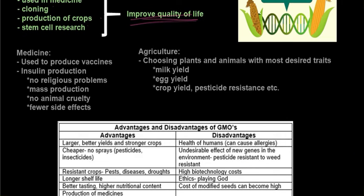In medicine, GMOs are used to produce vaccines and insulin — which we looked at last year. There are no religious problems, mass production is possible, there's no animal cruelty, and there are fewer side effects. Before bacteria were used to cultivate insulin, it was actually extracted from pigs. In agriculture, we choose plants and animals with the most desired traits to get high milk yields, chickens that produce lots of eggs, increased crop yields, and pesticide resistance.